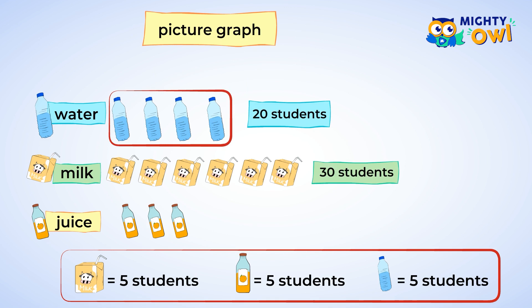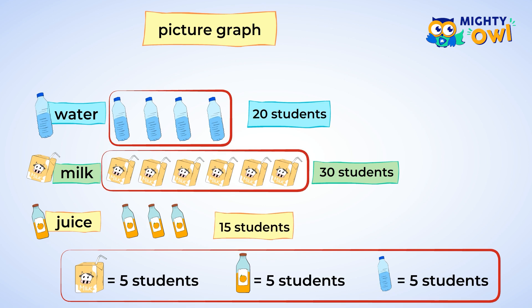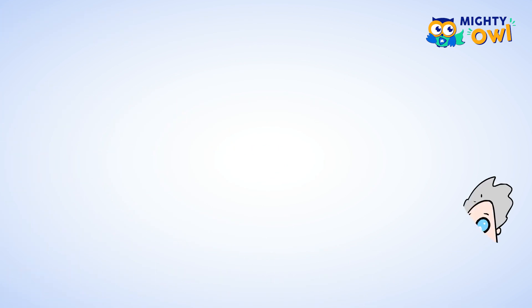The 30 students that like to drink milk have 6 containers of milk. The 15 students that like juice are shown by 3 juice containers. And don't forget, there's another way that the information can be shown.